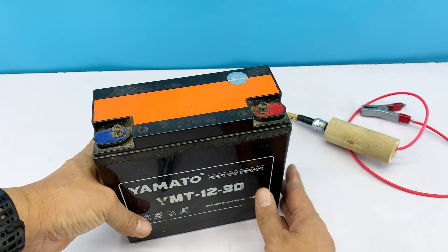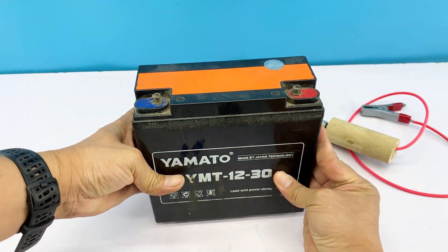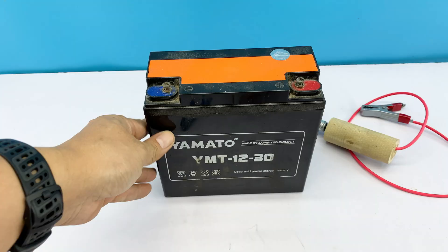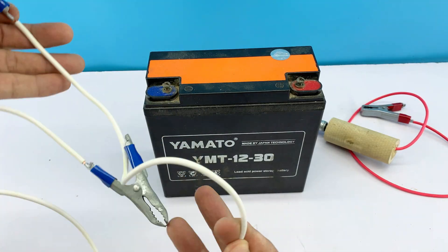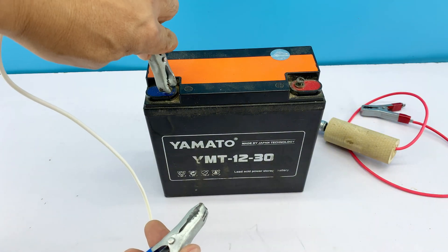To power this homemade welder, I'm using a small battery. It's compact, easy to handle, and provides just the right amount of electricity for the setup to run safely and steadily. Clip the leads to the correct terminals, and it's ready for action.